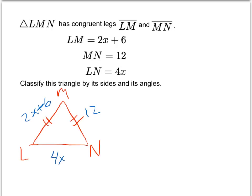And using the fact that these legs are congruent, I know that 2x plus 6 must equal 12. And so then we can solve that to figure out what x is.